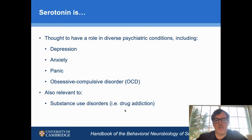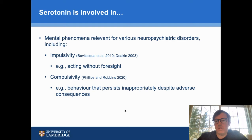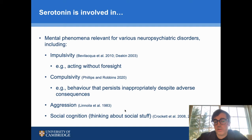Serotonin is thought to have a role in diverse psychiatric conditions, including depression, anxiety, panic disorder, and obsessive-compulsive disorder, or OCD. It's also relevant for understanding drug addiction, also known as substance use disorders. Serotonin is involved in an array of mental phenomena relevant for various neuropsychiatric disorders, including impulsivity — one example of which is acting without foresight — compulsivity, which is behavior that persists inappropriately despite adverse consequences, aggression, and also social cognition, or thinking about social stuff, social interactions, and decisions.